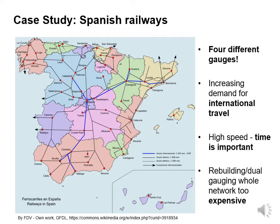In Spain, matters are somewhat complicated — they have four different gauges. There has been an increasing demand for international travel, and with high speed rail, time is very important. Rebuilding or dual gauging the whole network would be far too expensive, so let's now have a look at some of the solutions to this problem.